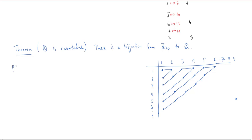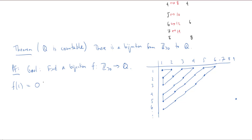Let's try to prove this. Our goal is to find a bijection — let's call it F — from the positive integers to Q. Step 1: I need this function, if it's a bijection, to be surjective. So I need to get every rational number, including 0. So I'm just going to get that out of the way: F of 1 is going to equal 0. So I know 0 has a preimage. Now I just need to get all the rest of the rationals.